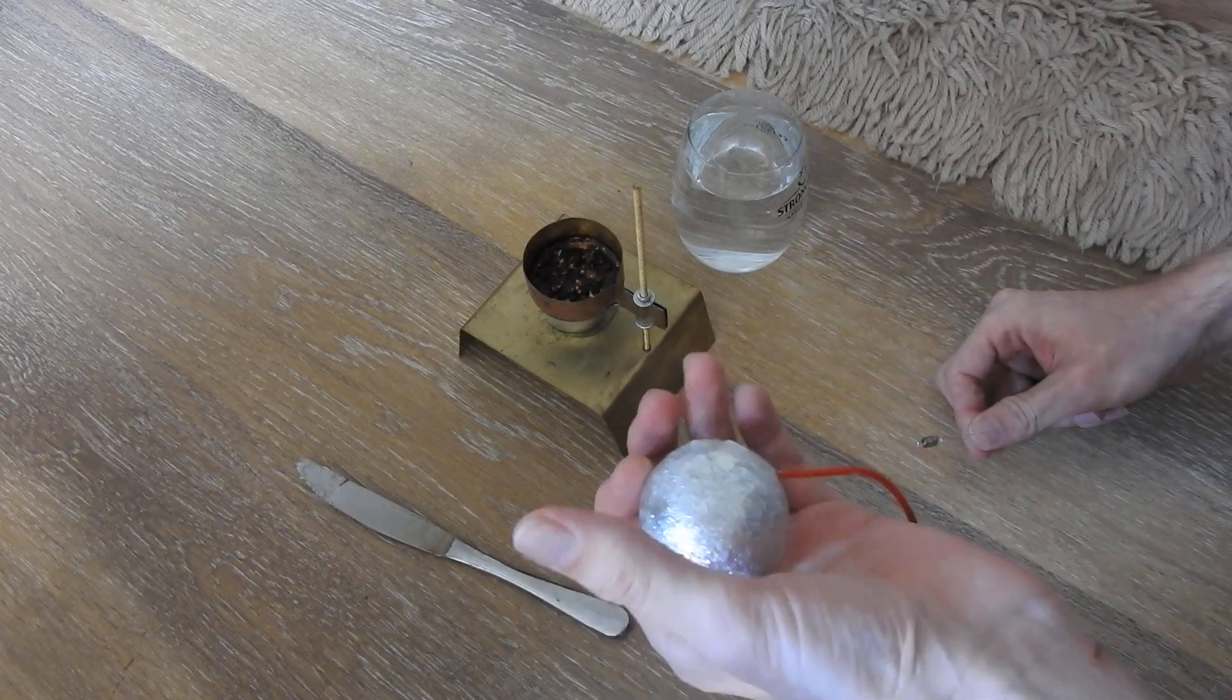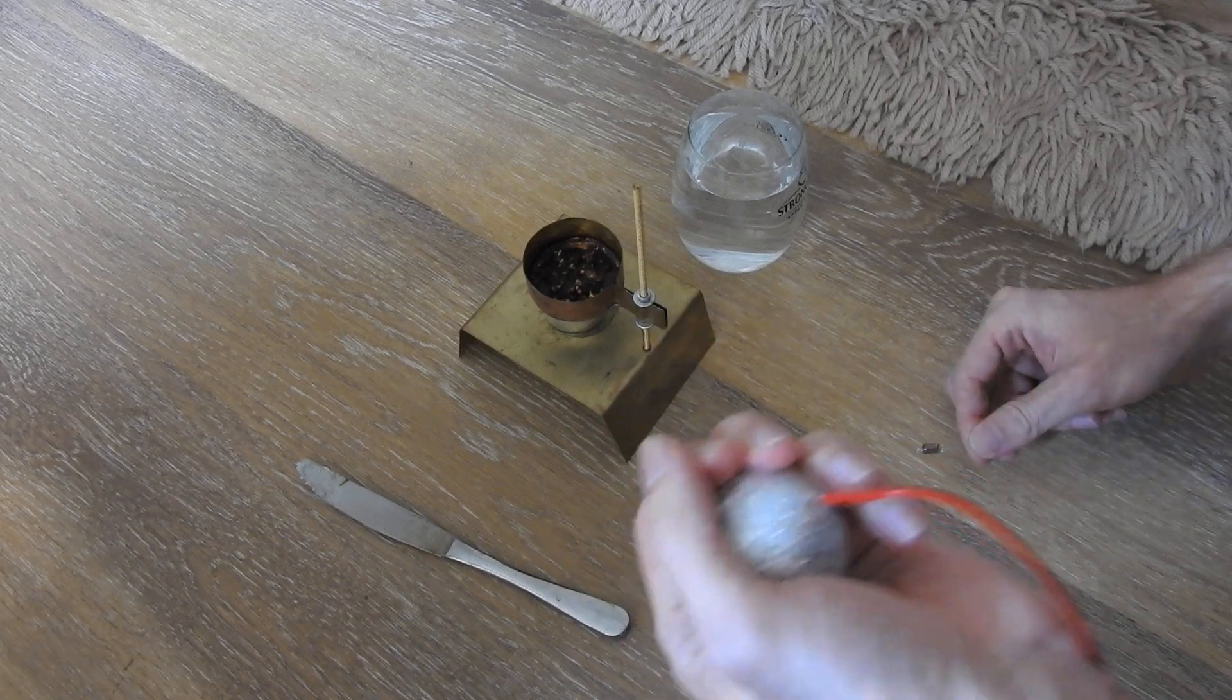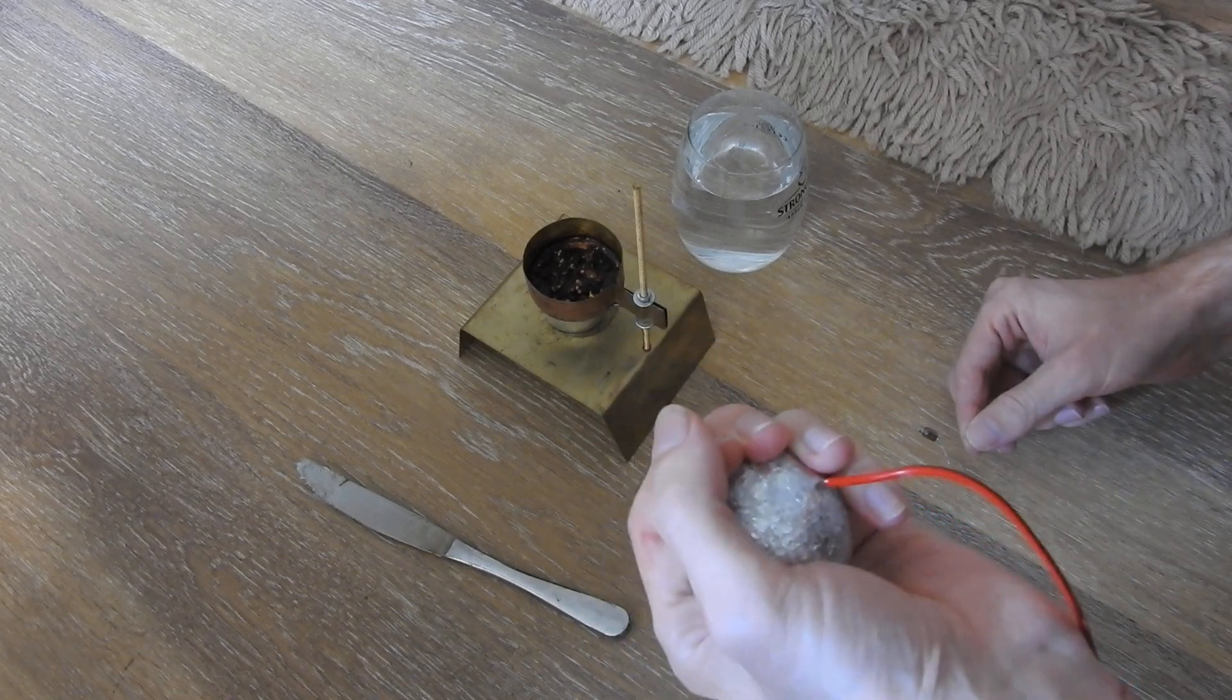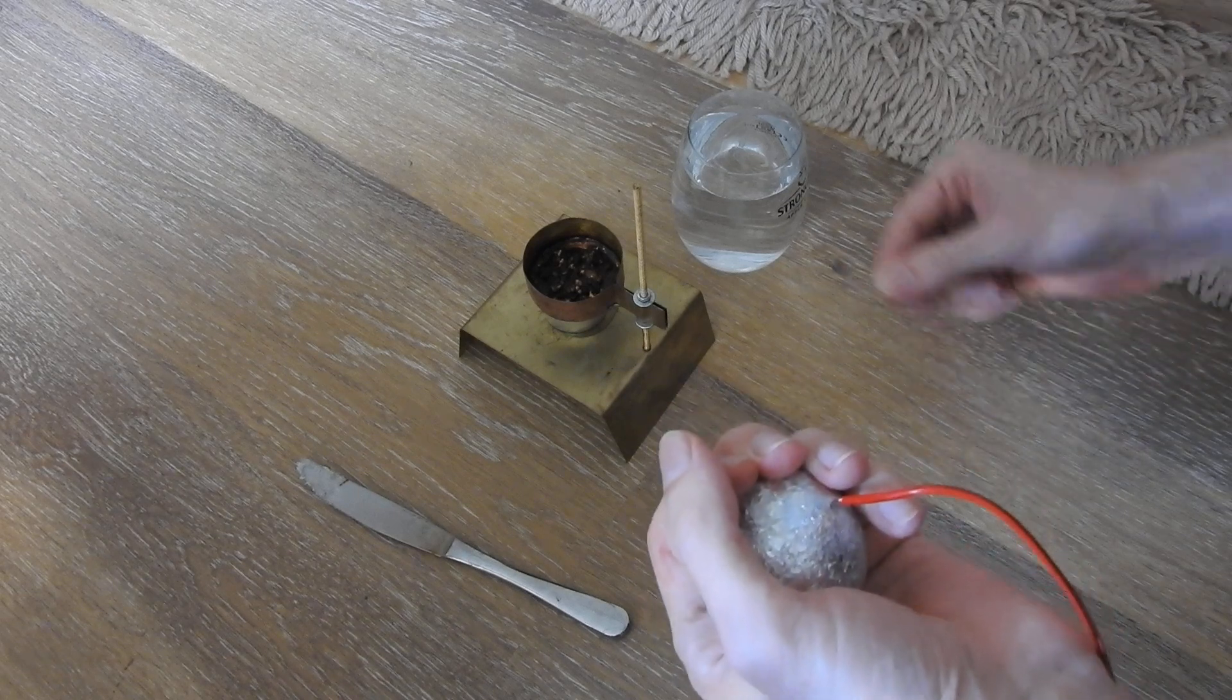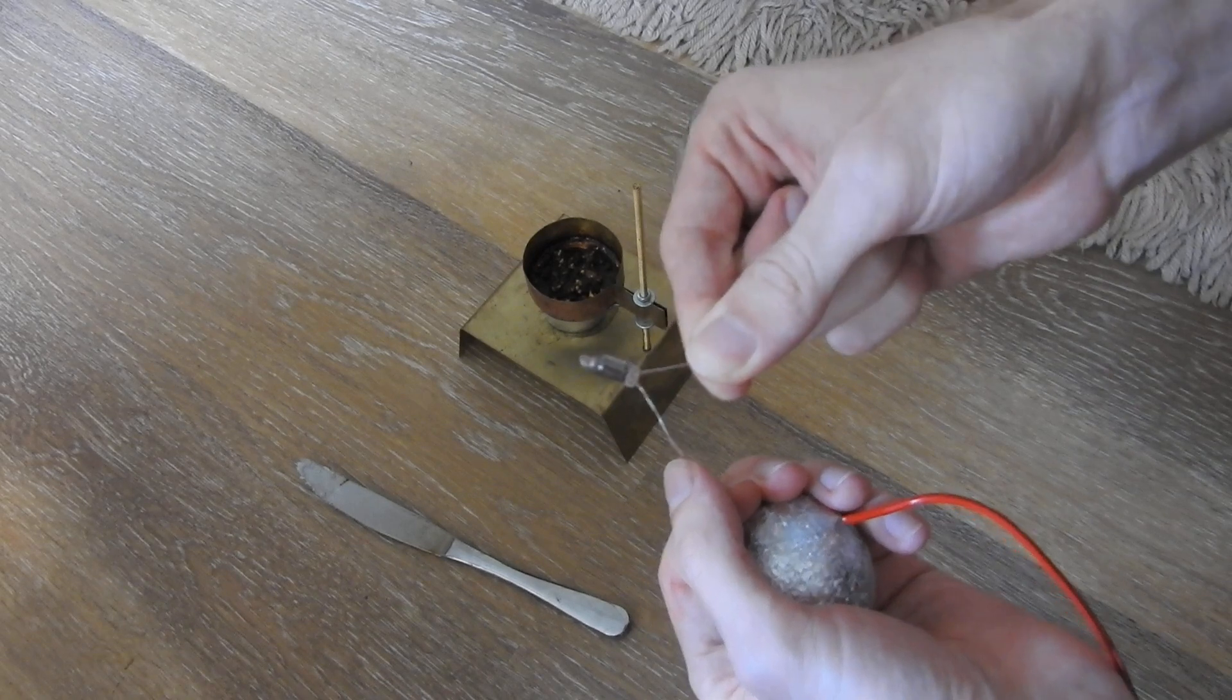So here I have the sphere holding it in my hand. If I hold it like this, so the hand covers the ball very well, I have here another neon bulb.